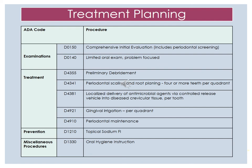Next, we will go over the treatment plan for Kim. We have ADA codes and procedures. For examinations, we will do the D0150 comprehensive initial evaluation and the D0140 limited oral exam, which is problem focused. For treatments, which will not all be done on the same day, her overall treatment will include the D4355 preliminary debridement, D4341 periodontal scaling and root planing for four or more teeth per quadrant, D4381 localized delivery of antimicrobial agents via controlled release vehicle into diseased crevicular fluid per tooth, D4921 gingival irrigation per quadrant, and D4910 periodontal maintenance. For prevention, we will include D1210 topical sodium fluoride, and for miscellaneous procedures, D1330 oral hygiene instruction.